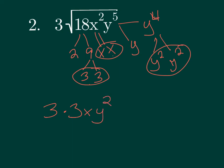Inside my square root, what is left? Well, I have a 2. That's not paired up, and I have a single Y left. So, 2Y goes inside the square root. Let's simplify this. 3 times 3 is 9. So, we get 9XY squared, square root of 2Y.